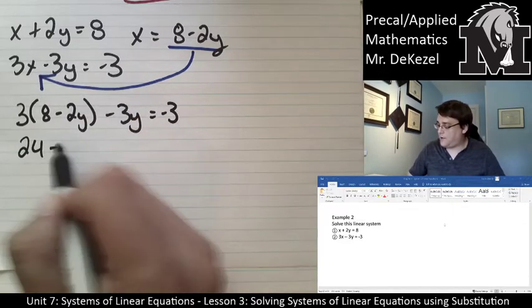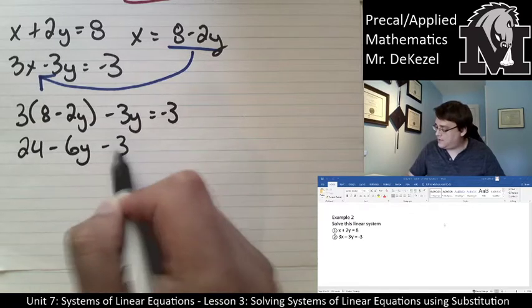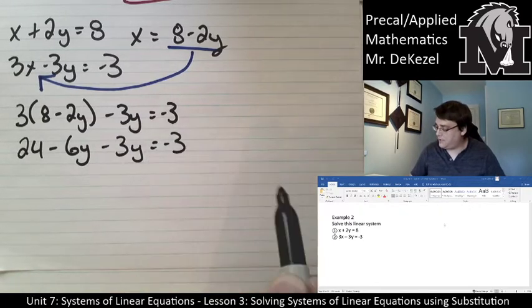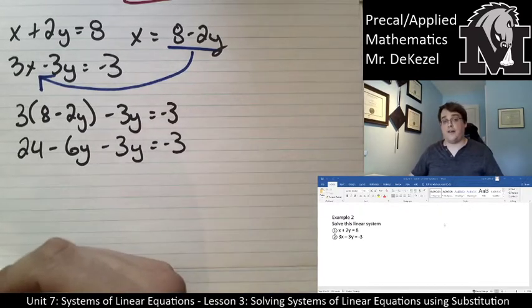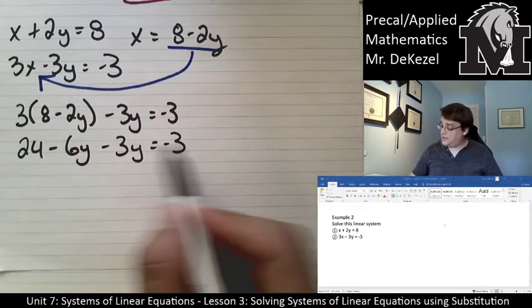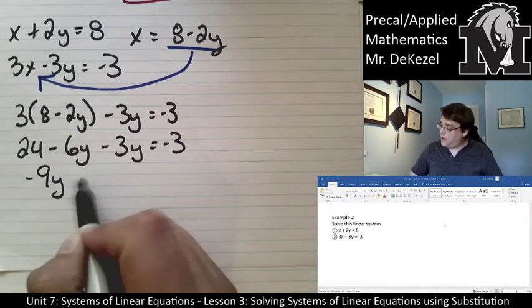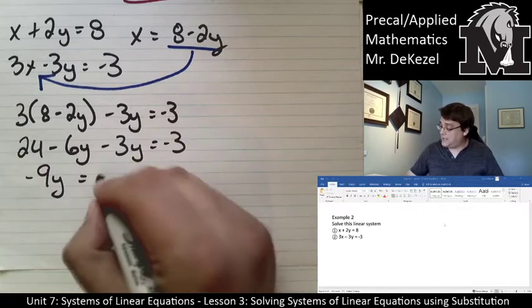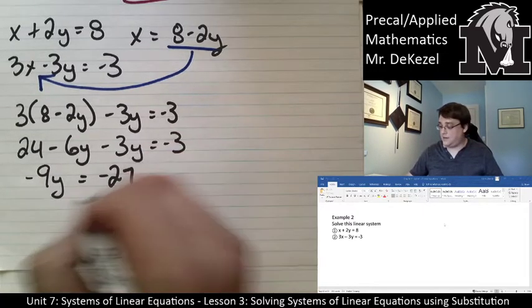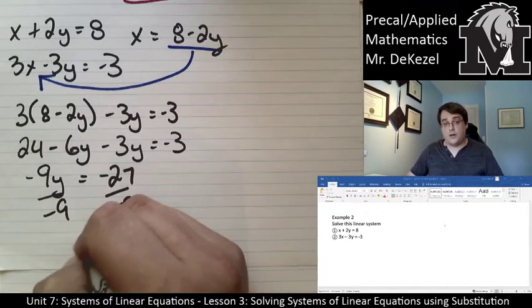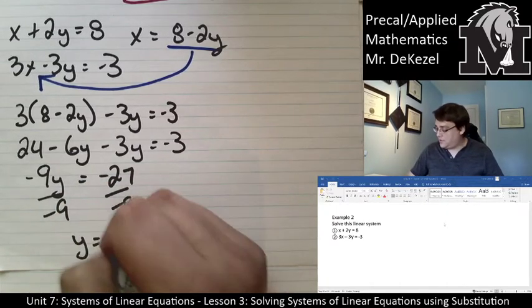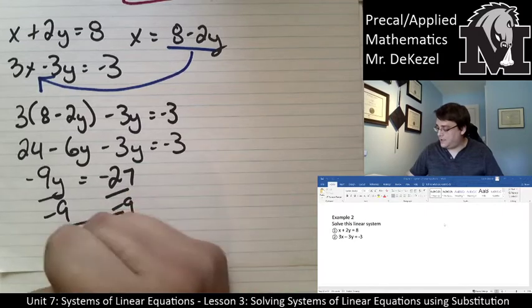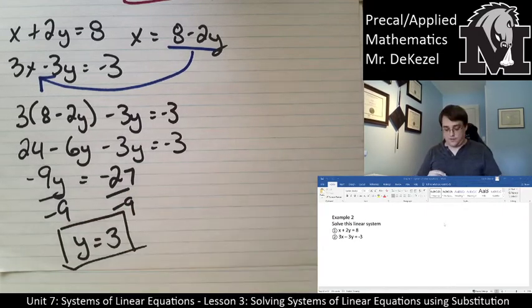This would be 24 minus 6y minus 3y equals negative 3. I'm going to keep my y's on the left and move my numbers over to the right. So it would be negative 9y is equal to, subtract 24, so that would be negative 27 on this side. Divide both sides by negative 9, y is equal to 3.